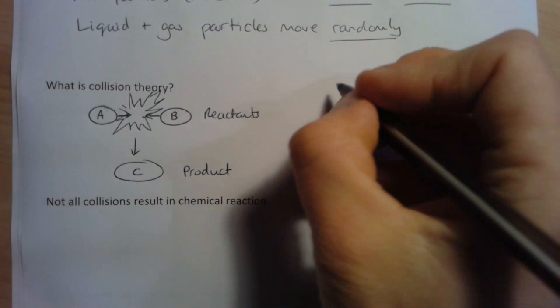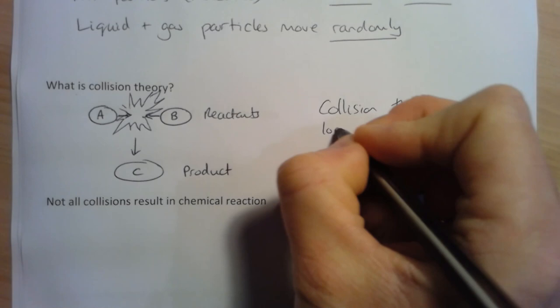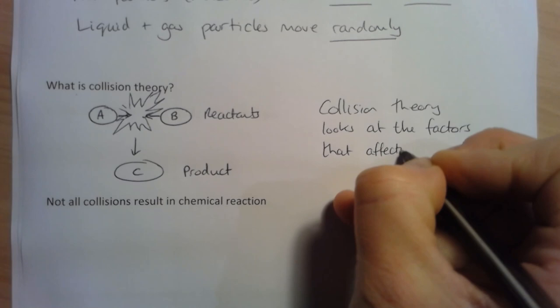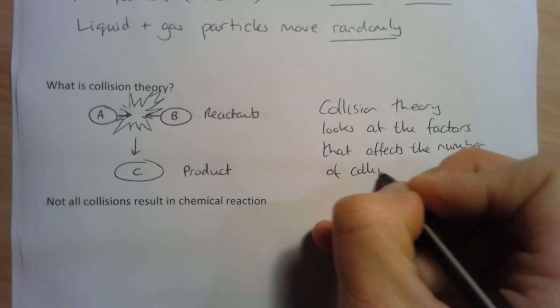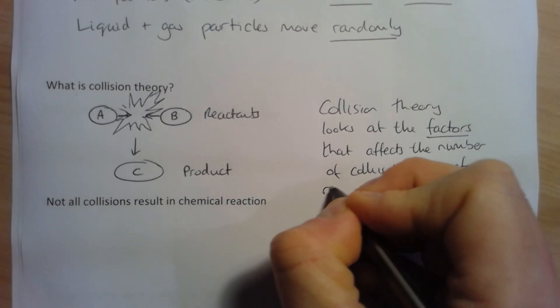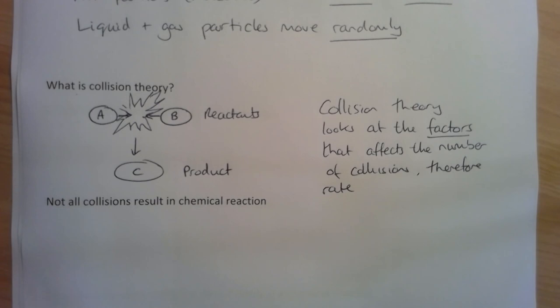Collision theory looks at the factors that affect the amount of collisions. You'll see later things like temperature, concentration, and surface area that affect the number of collisions and therefore the rate of reaction. So it's the theory that allows us to explain how these collisions and these factors affect the rate of a chemical reaction.